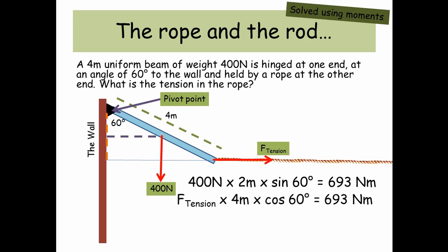Now that must be equal to the moment produced by the tension going in the other direction. So that's going to be equal to the force of tension in the rope times by 4 meters this time times by cos of 60. Just rearrange and then we find that the tension in the rope is 346 newtons.